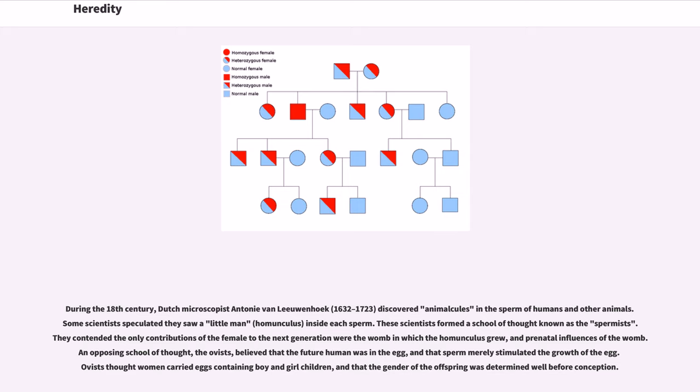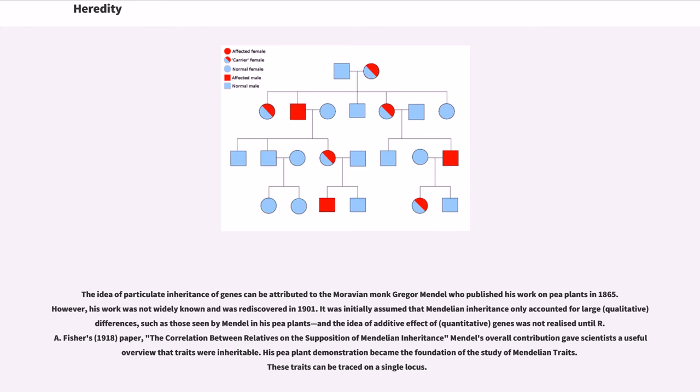An opposing school of thought, the ovists, believed that the future human was in the egg and that sperm merely stimulated the growth of the egg. Ovists thought women carried eggs containing boy and girl children, and that the gender of the offspring was determined well before conception.